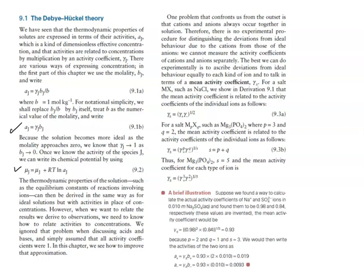One problem that confronts us is that cations and anions always occur together in solution. Therefore, there's no experimental procedure for distinguishing deviations from ideal behavior due to cations from those due to anions. We cannot measure the activity coefficients of cations and anions separately. The best we can do experimentally is to talk in terms of a mean activity coefficient. For salt MX such as sodium chloride, the mean activity coefficient is related to individual ion activity coefficients as given in relationship 9.3a.